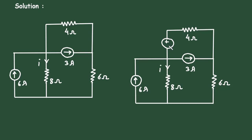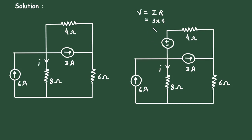Here this terminal will be positive and this will be negative, according to the direction of the current. The voltage V is equal to I multiplied by R. The value of current is 3 ampere and the value of resistance is 4 ohm, so it will be 3 into 4 — 12 volt. So we can write it is 12 volt.